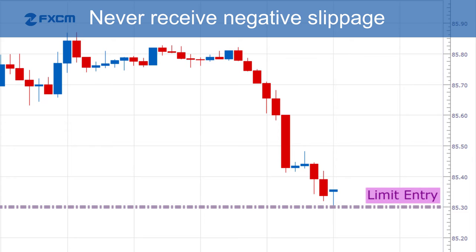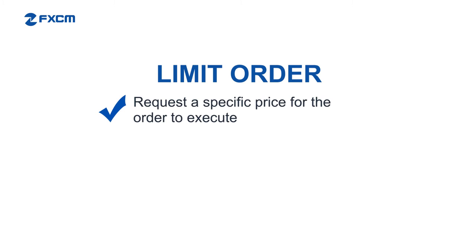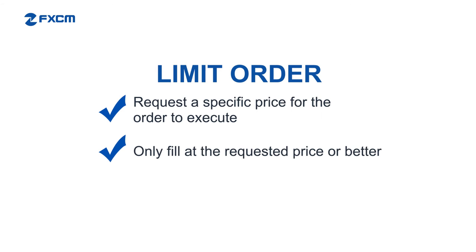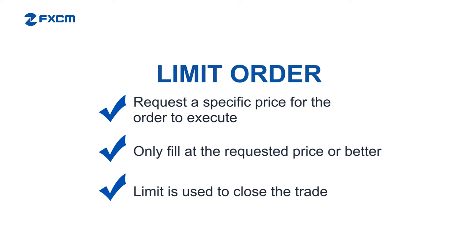Now let's move on to limit orders. A limit order is identical to a limit entry order in that you request a specific price for the order to execute, and the price the order can fill at is only the requested price or a better price. The only difference between the orders is that a limit is used to close a trade, since it's associated with a specific trade.